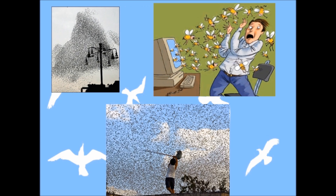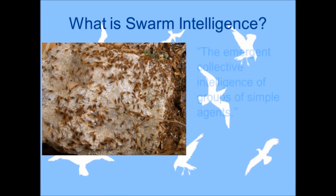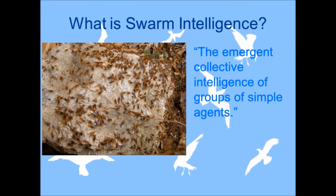Swarm behavior is a collective behavior exhibited by animals of similar size which aggregate together, perhaps milling about in the same spot or maybe moving or migrating in some different direction. Now let's take a look at what swarm intelligence is — a term given by Eric Bonabeau in his book 'Swarm Intelligence: From Natural to Artificial Systems', which is a best-selling book. Swarm intelligence is the emergent collective intelligence of groups of simple agents.